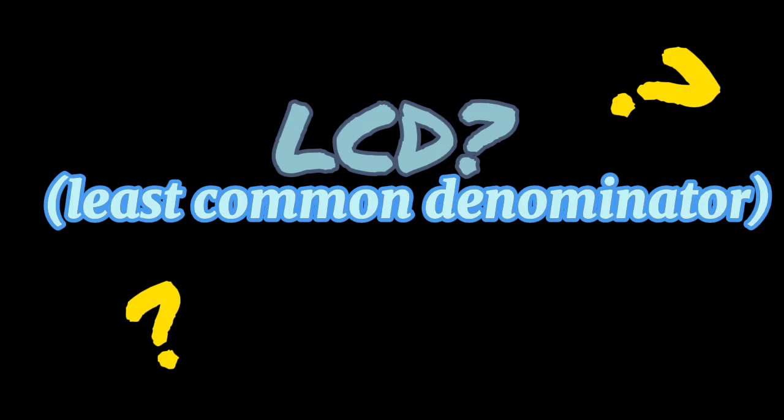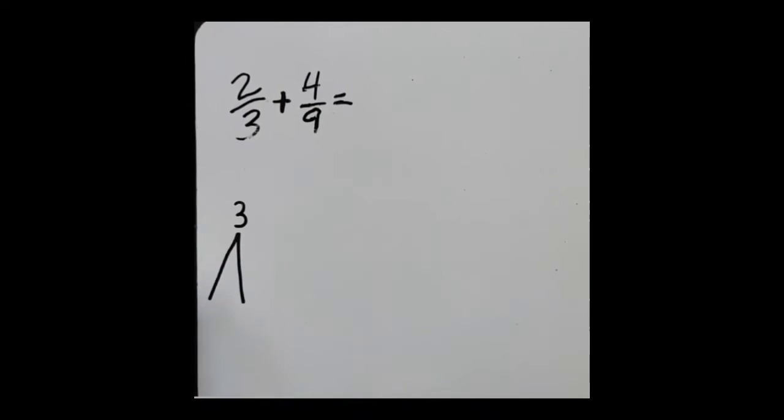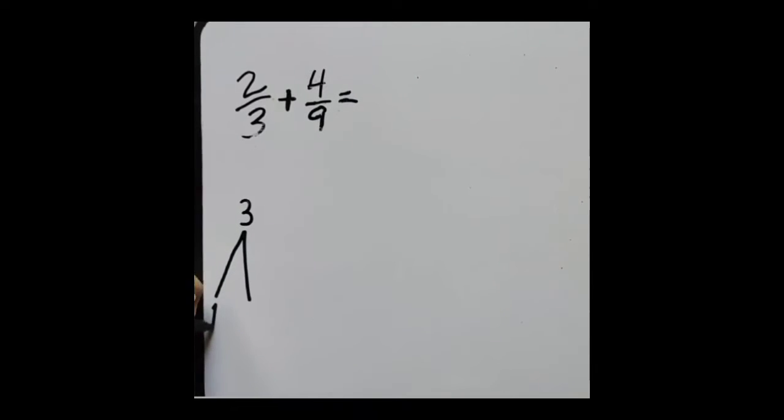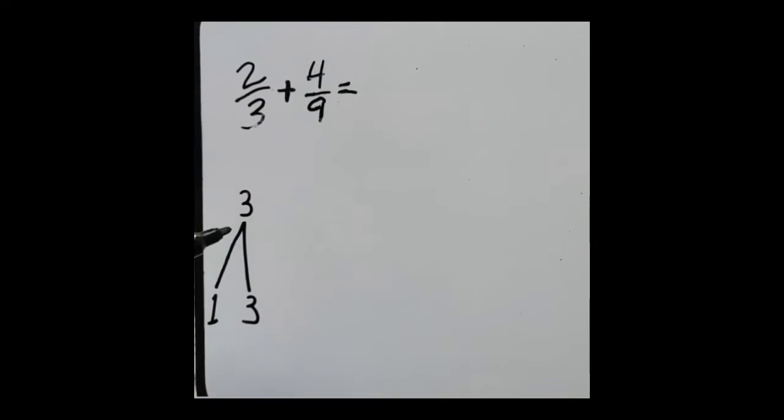Paano ba mahahanap o makukuha ang LCD? Gagamitin natin ang mas madaling paraan sa pamamagitan ng factor 3. Mag-iisip tayo ng mga factors o number na pwede natin i-multiply na ang magiging sagot ay 3. Since ang 3 ay prime number, 1 at itself number lang ang pwede.